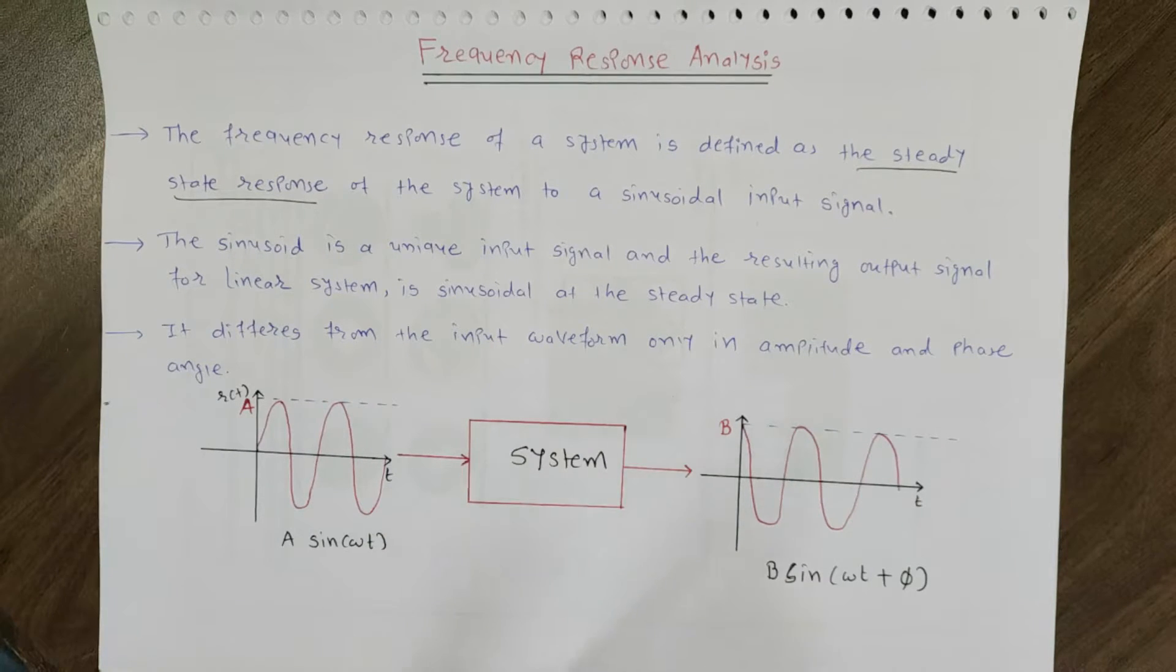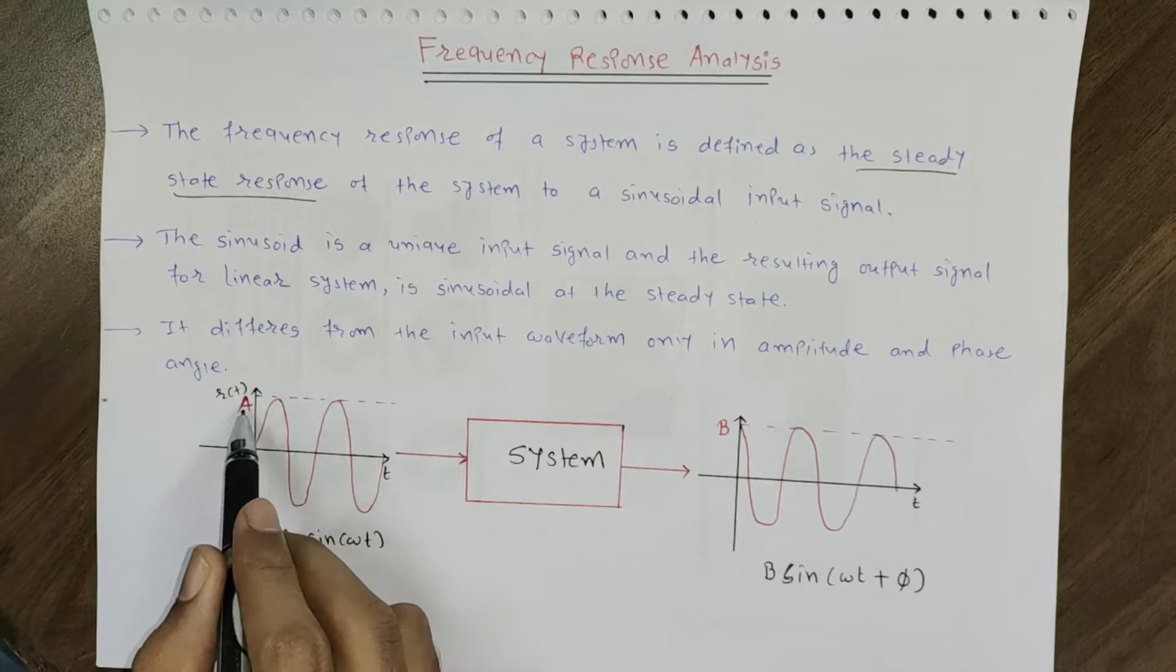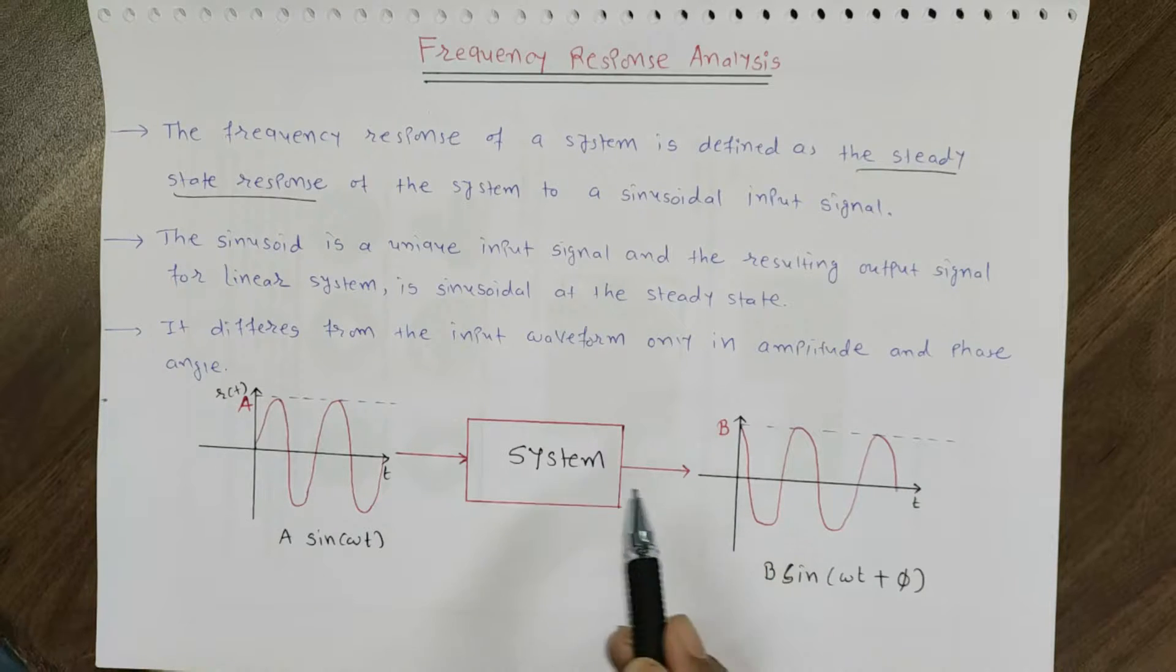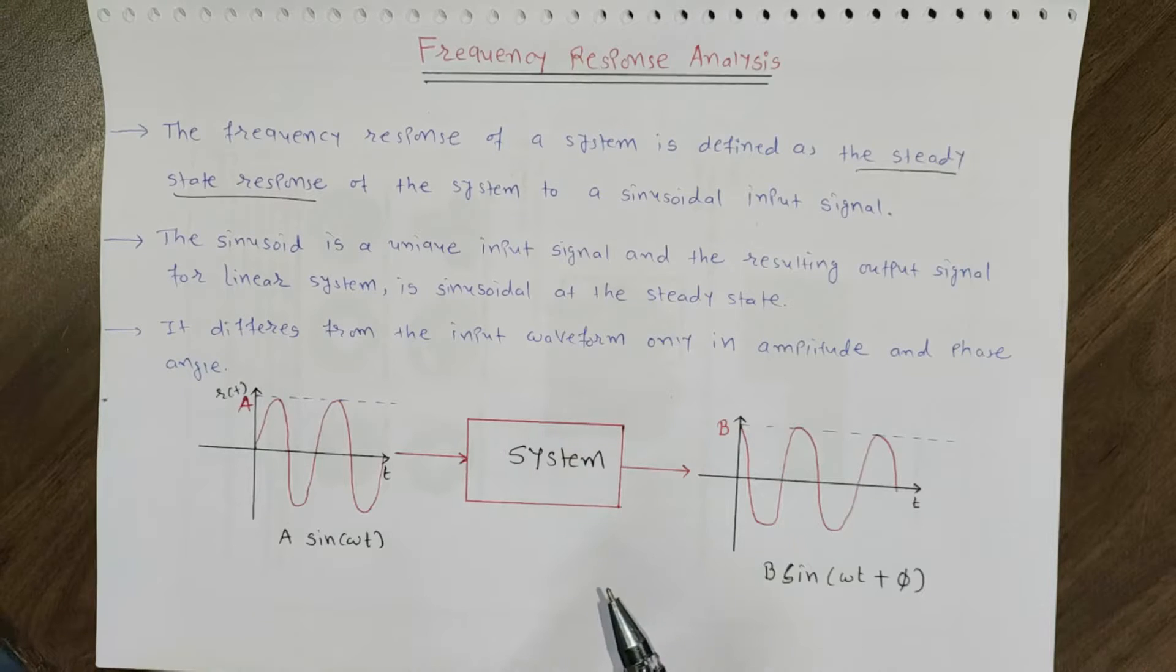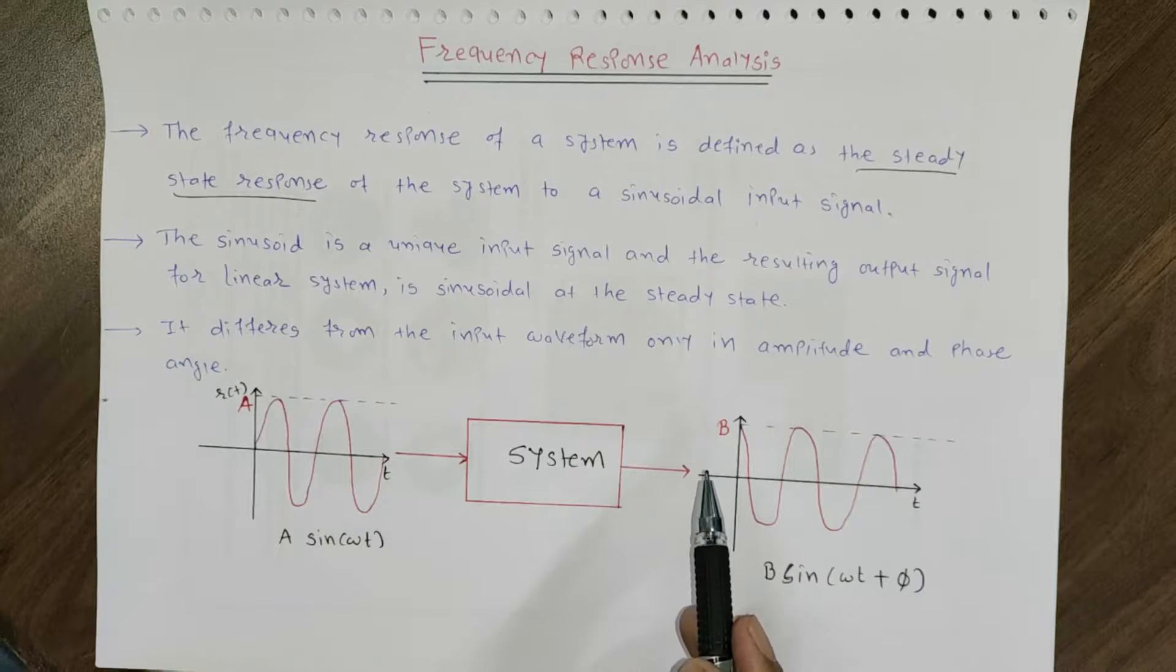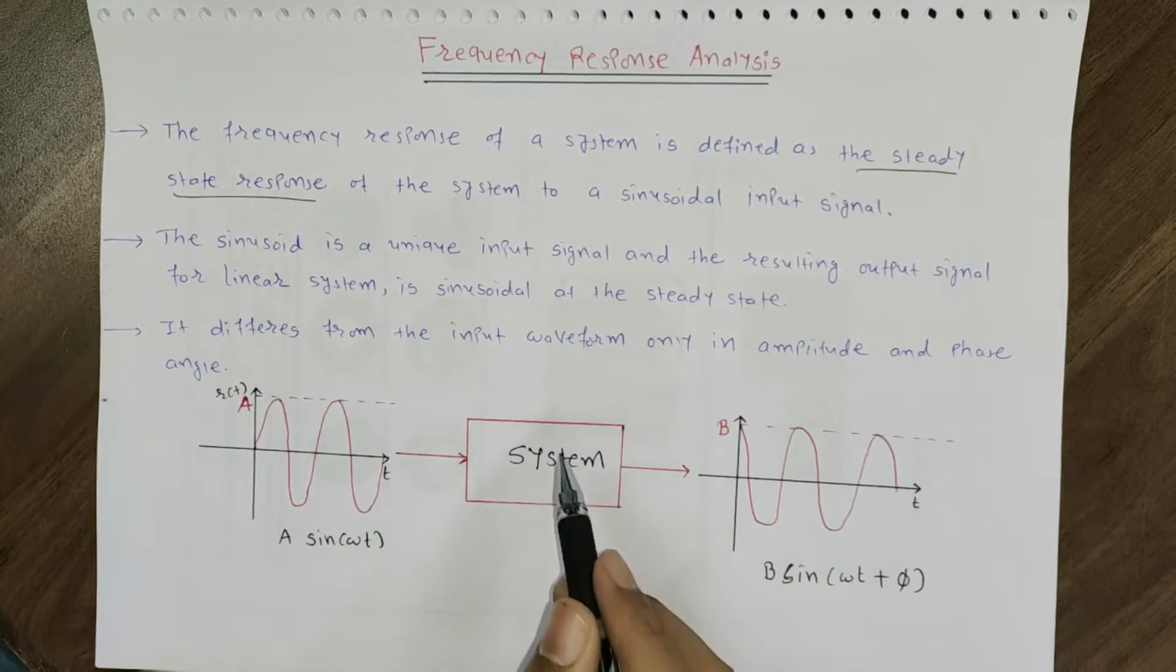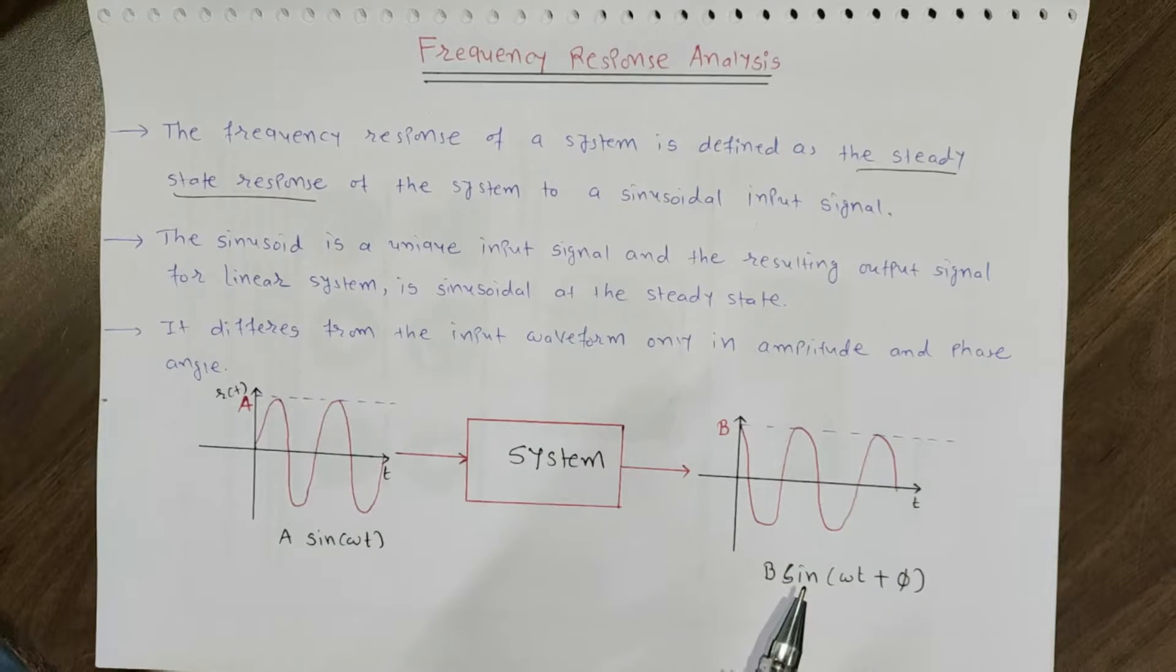If I pass a sinusoidal signal through the LTI system, the output is also sinusoidal. What will change is the magnitude, initially magnitude was A, now the magnitude is B, and also a bit of phase shift depending on what is sitting inside the system. We will exactly characterize how B and phi will change based on what is inside the system.